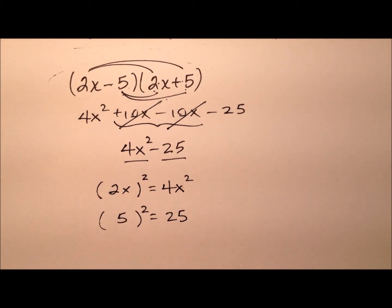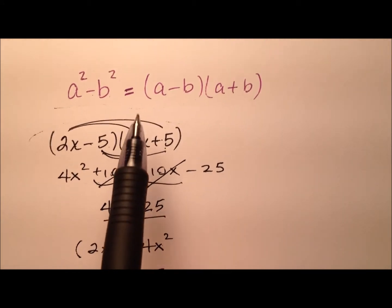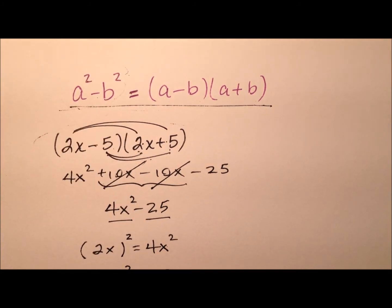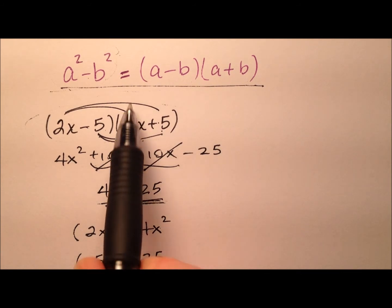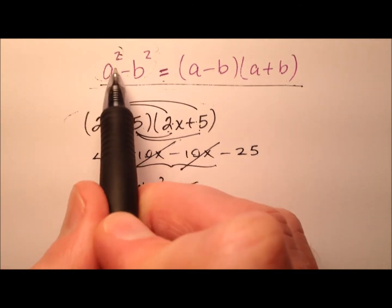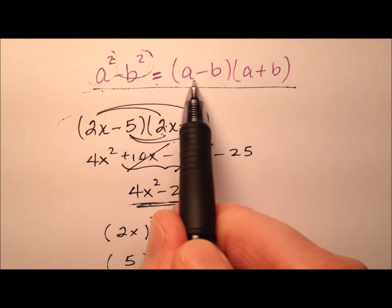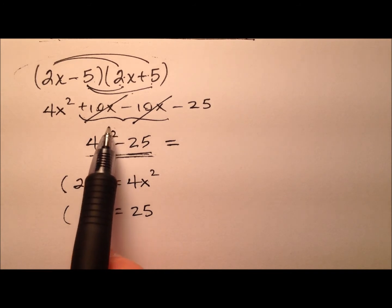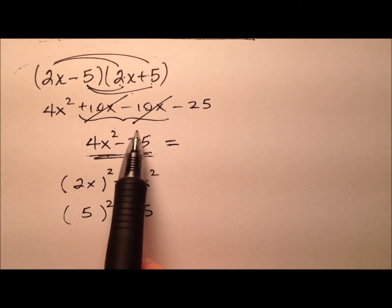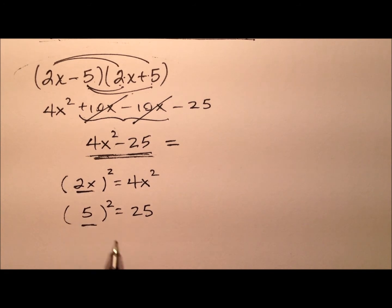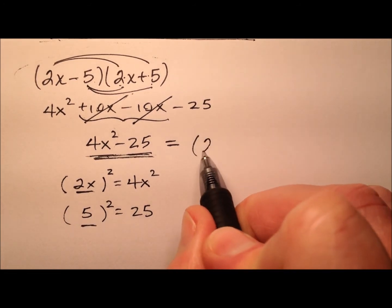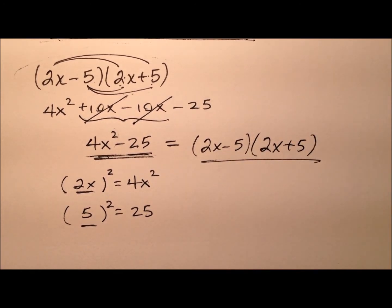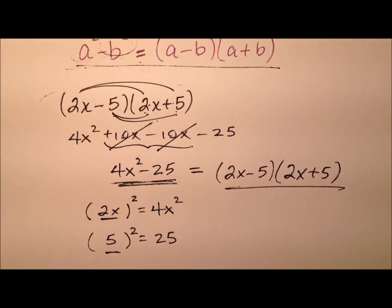And what got squared to give us 25? It was 5. So looking back at our formula, if we have the difference of two perfect squares, we can factor it by taking the square root of each term and putting it into our factorization. Going backwards, we found what got squared to give us each term — those are the square roots — so the factorization is 2x minus 5 times 2x plus 5. That is our difference of squares factorization.